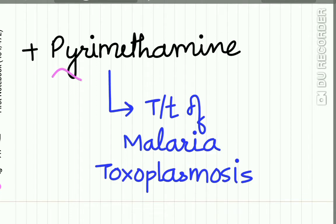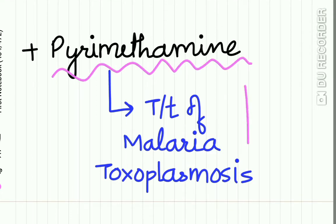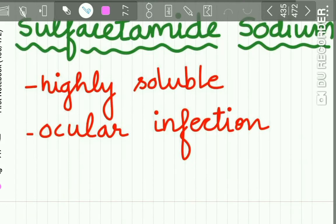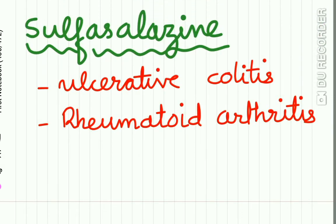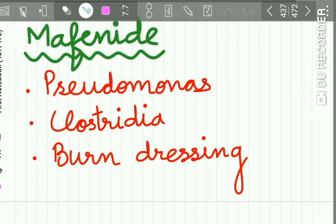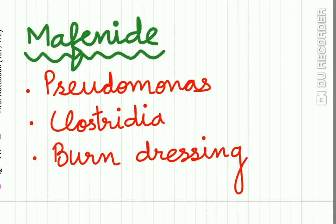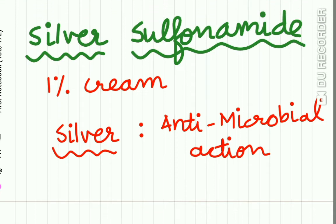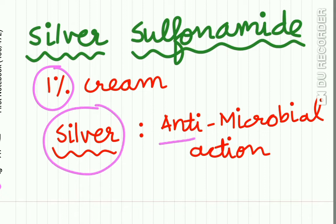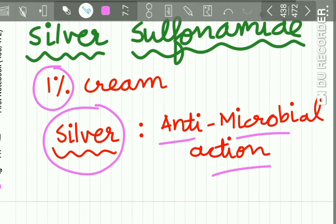Sulfadiazine in combination with pyrimethamine is used in the treatment of malaria and toxoplasmosis. Sulfacetamide sodium is a highly soluble drug used in ocular infections. Sulfasalazine is used in the treatment of ulcerative colitis and rheumatoid arthritis. Mafenide is used in the treatment of Pseudomonas and Clostridia, and in burn dressing to prevent infection. Silver sulfadiazine 1% cream is used over burns — it releases silver, which has antimicrobial action.